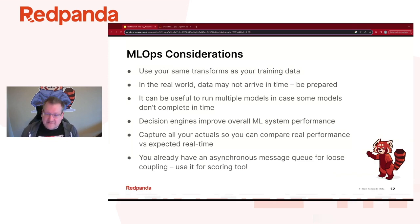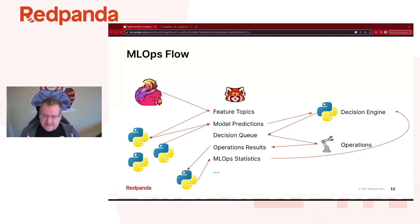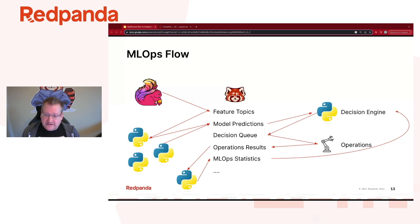You can also use it for doing your actual real-time scoring and decision-making. There's a bit of an eye chart here, but it gives you an idea of how this all comes together. I have all my data, Flink is making my transforms to give me my feature topics, I make model predictions, and the decision engine looks across those models within whatever latency is needed. That goes into the decision queue, operations listens to that queue, sends back the real results, and you build your MLOps statistics — a lifecycle where all the data keeps churning real-time, giving you labeled training data of what you expected versus what really happened.